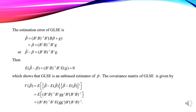The estimation error: beta hat = (B'B)⁻¹B'Z, and Z = Bβ + g. Substituting, beta hat = β + (B'B)⁻¹B'g. So beta hat minus beta = (B'B)⁻¹B'g. Taking expectation, since expectation of g is zero, expectation of beta hat minus beta equals zero. Therefore the Generalized Least Squares Estimator is an unbiased estimator of beta.